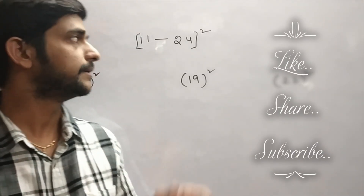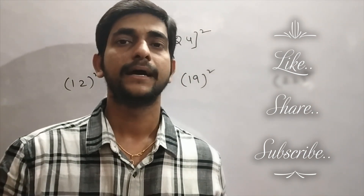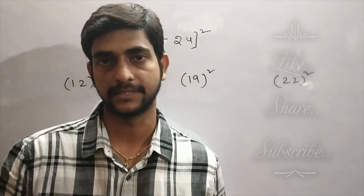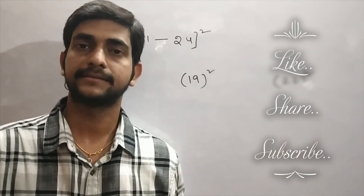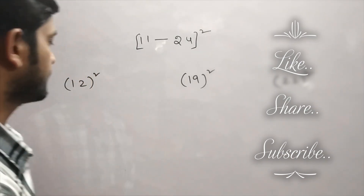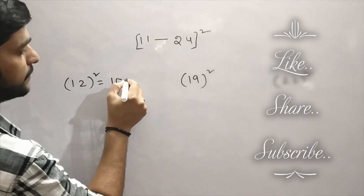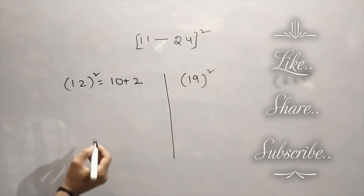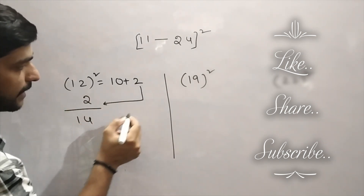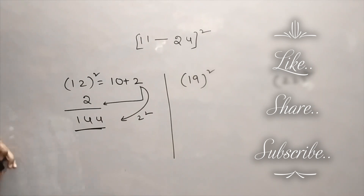Now we are going to find out squares from 11 to 24. Before discussing this, first we have to be sure about 1 to 10 squares — hope you all know them, as that will be helpful to solve these questions. Let's take the numbers 12, 19, and 24. I will take some random numbers; try the same logic for the other numbers. First I am considering 12. Take the base as 10, and 12 we can write it as 10 plus 2. Take this 2 and add it to 12 — here you are getting 14. And consider 2 squared, which will be 4. So 144 will be the answer for 12 squared.